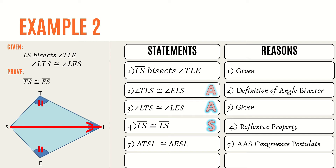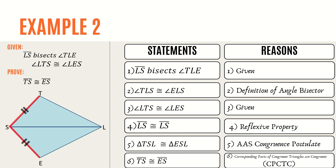Since the two triangles TSL and ESL are congruent, therefore side TS is congruent to side ES. The reason is corresponding parts of congruent triangles are congruent, or CPCTC. If you are still having a hard time understanding these examples, don't worry because we still have two more examples.